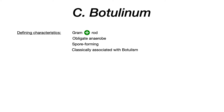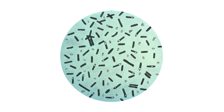Clostridium botulinum is a gram-positive rod. It's an obligate anaerobe. It's spore-forming, which is very important for the diseases that it causes, and it's classically associated with, as the name implies, botulism. Here's what it looks like under a microscope — you can see very clearly delineated rods, the gram-positive rods of Clostridium botulinum.